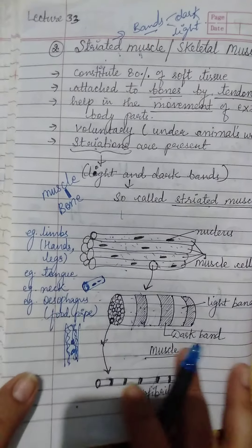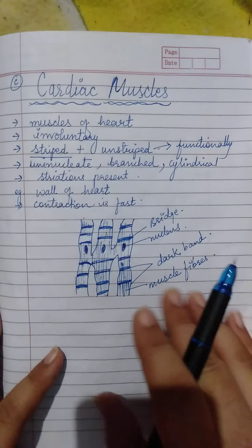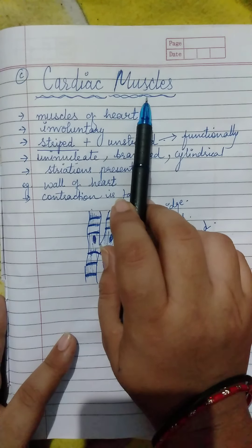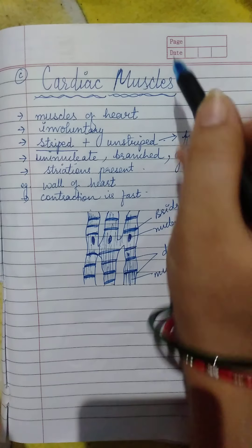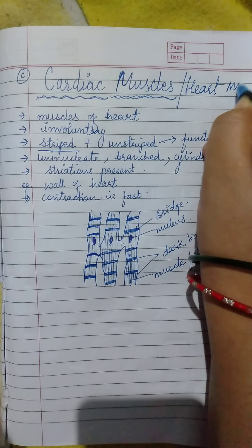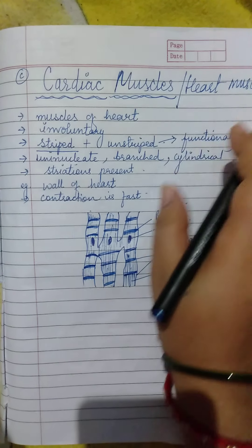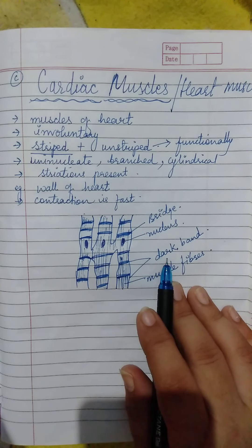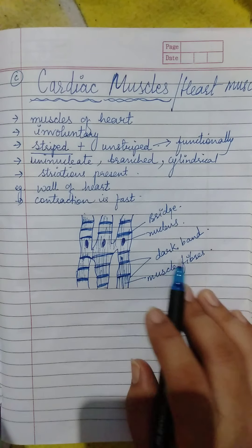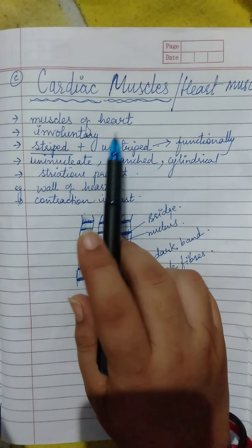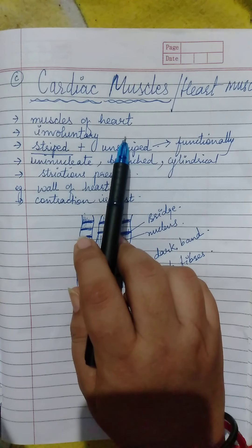Now we will proceed to our next muscle type, that is cardiac muscles. Cardiac muscles are present in the heart. Heart muscles are also known as cardiac muscles. Cardiac muscles are involuntary in nature because they cannot be controlled.